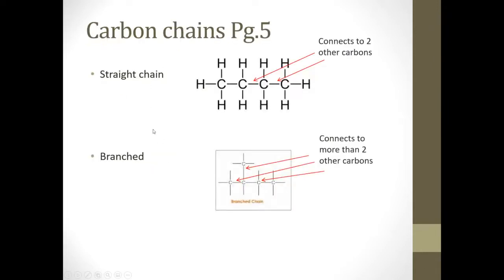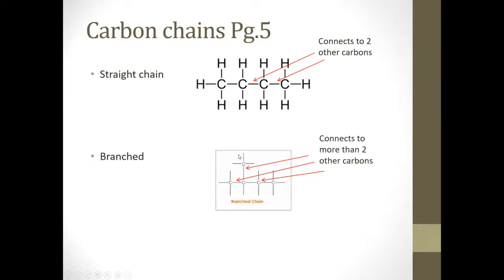When carbon bonds together it can do a couple of different things. It can join together in a straight chain, where inner carbons connect to two other carbons in a continuous chain. The other option is a branched hydrocarbon, where some carbons connect to more than two other carbons. So a carbon might be attached to three different carbons. It'll either be a straight chain or some type of branched chain, and branched chains are pretty easy to identify by looking at them.